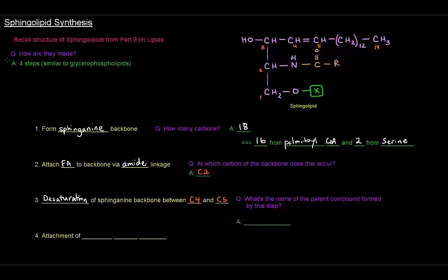The question there is, what's the name of the parent compound formed by this step? In that step, we will make the parent compound of sphingolipids, which is called ceramide. After that, the last thing to do is have the attachment of the polar head group, depending on what it is.